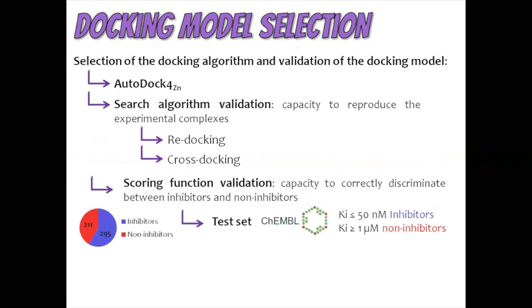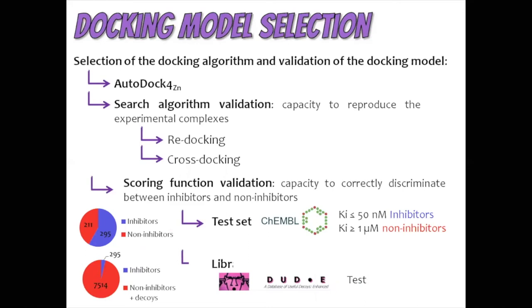We validated the scoring function using a test set of known inhibitors and non-inhibitors. Additionally, we generated a decoys library. Through this strategy, we generated inactive decoys and increased the size of the test set, reducing the error in the performance evaluation.